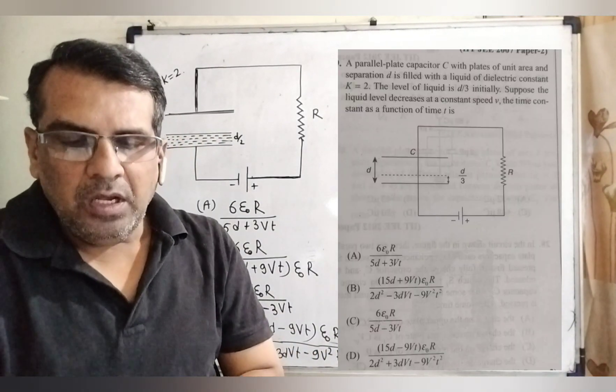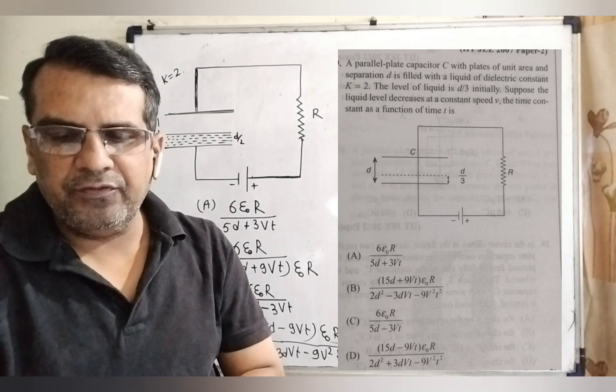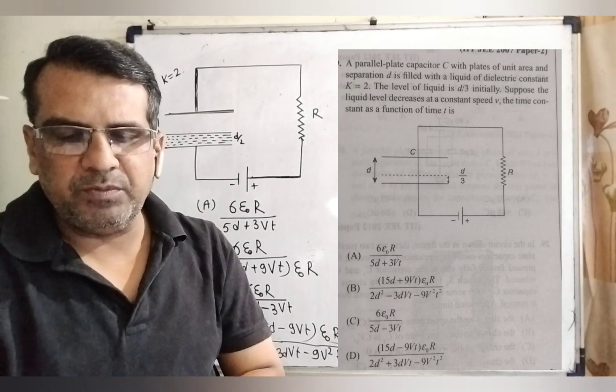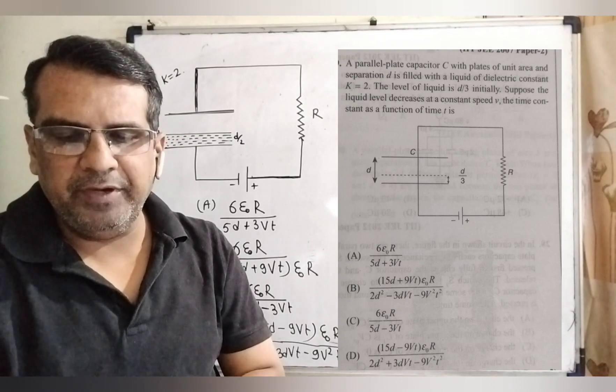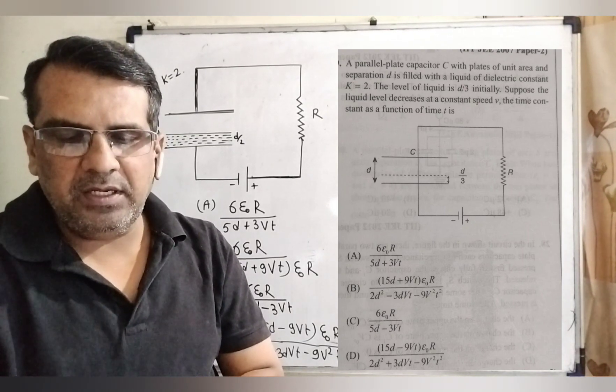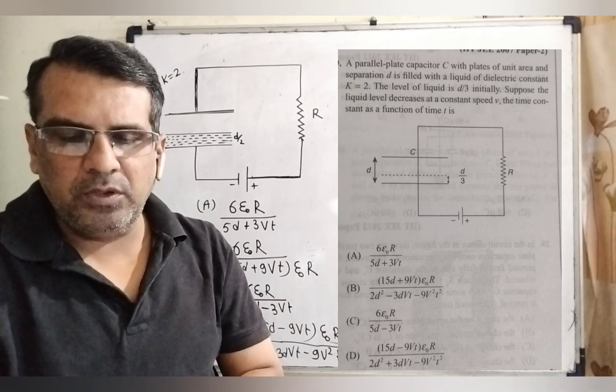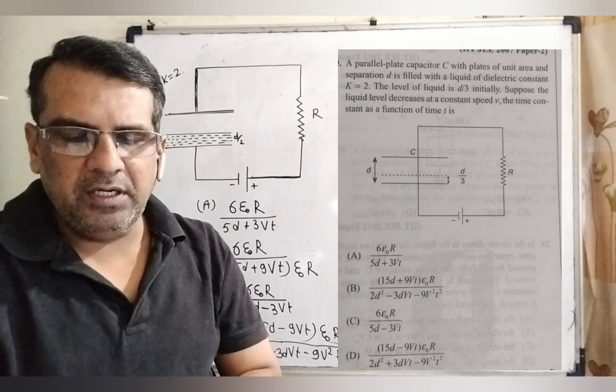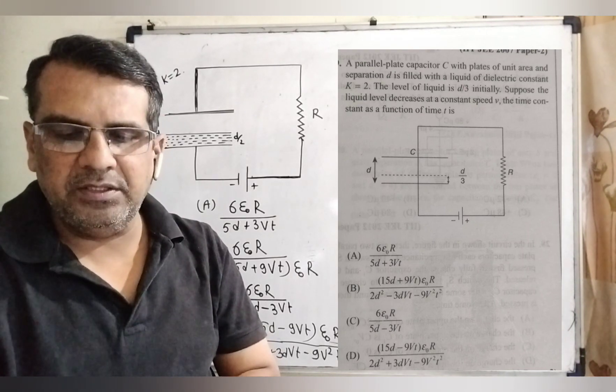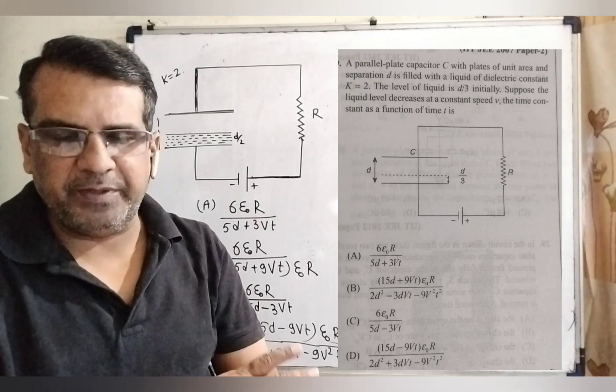Here is the question. A parallel plate capacitor C with plates of unit area and separation d is filled with a liquid of dielectric constant k equal to 2. The level of liquid is d by 3 initially. Suppose the liquid level decreases at a constant speed V. Here V is not potential, here V is the speed.